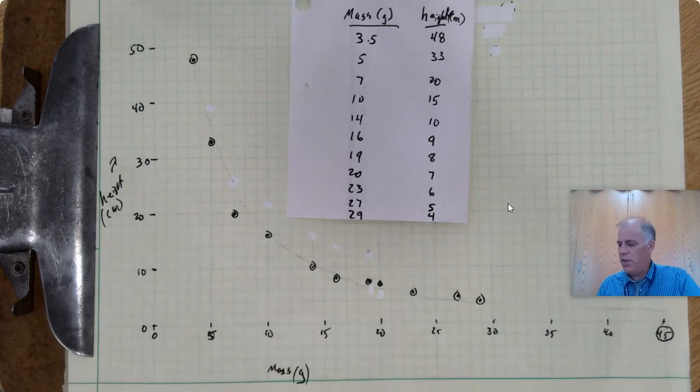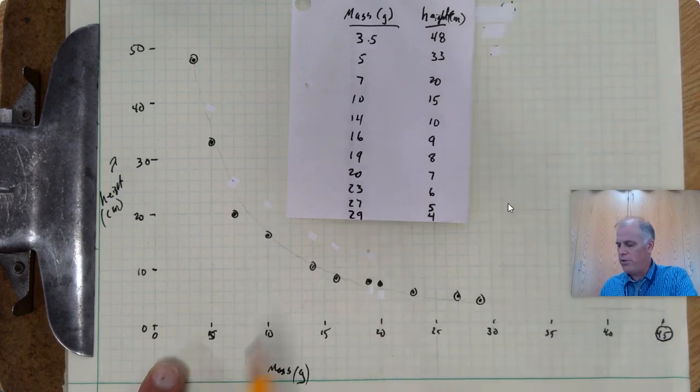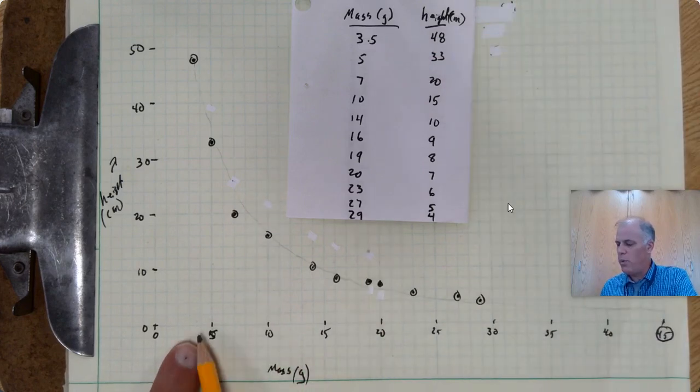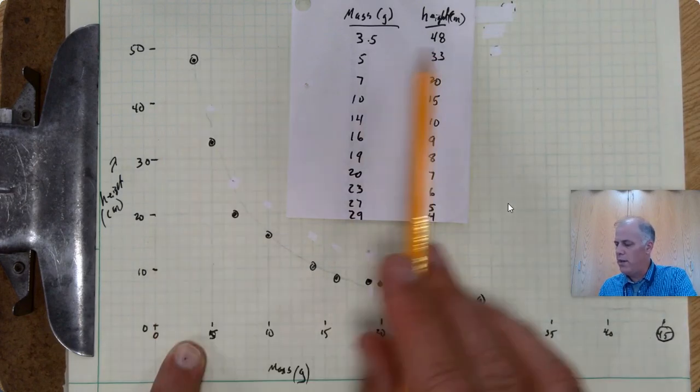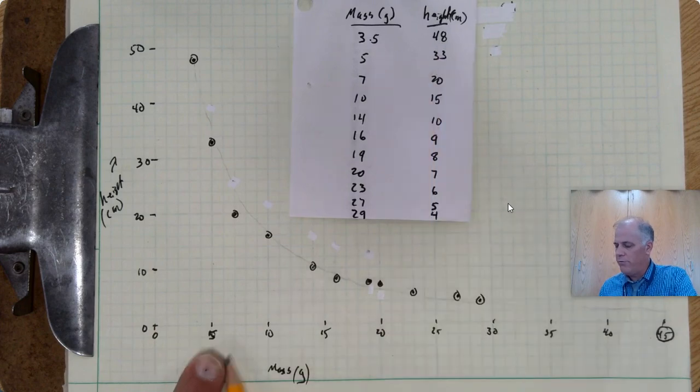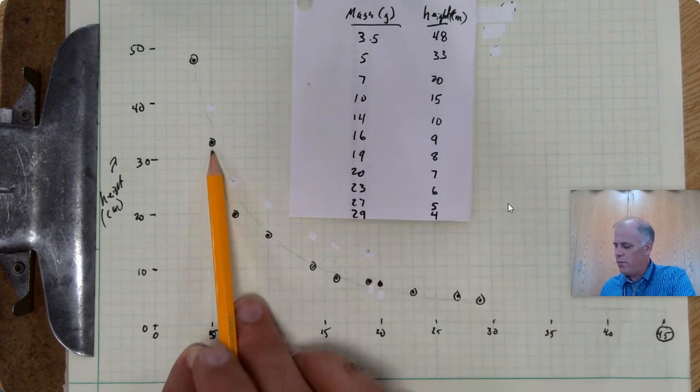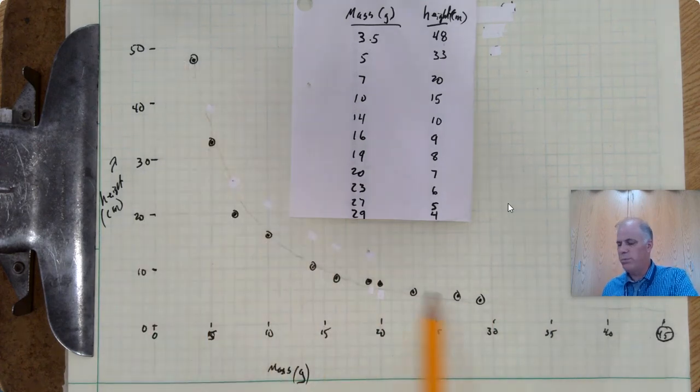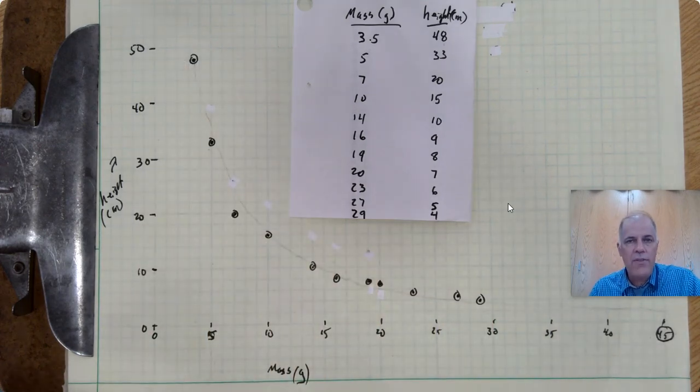As you can see, for 3.5 grams, this is the mass in grams across the bottom. For 3.5 grams, we have 48 centimeters height. For 5, 33 centimeters and so on down the line. That's where the plot comes through.